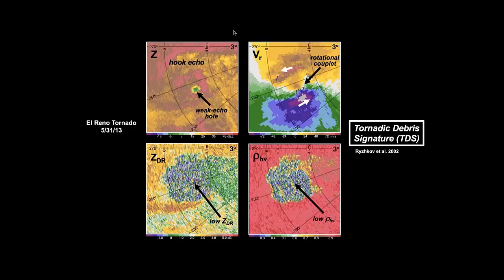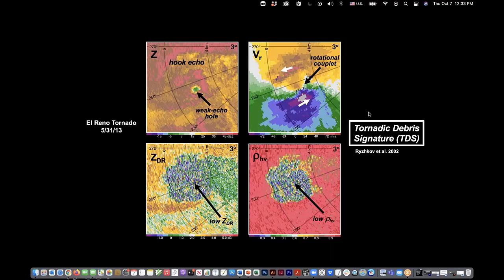I always like to use the El Reno tornado — an incredible tornado in 2013. It's a wonderful example of the characteristics of the TDS, the tornadic debris signature. You can see the hook echo and the incredible rotational couplet — those range rings are every two kilometers. ZDR on the bottom left shows a relatively circular region of low ZDR, but when you look at rho-HV, it just jumps out at you. Rho-HV is the preferred variable.